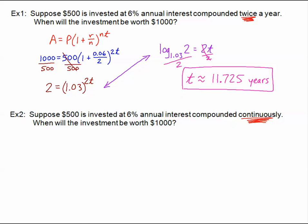Example two is almost identical except, remember, the buzzword continuously. That's the PERT formula. A equals PE to the RT. The numbers are basically going to go in the same spots, the 500 and the 1,000, so I have $1,000 here. The 500 is my coefficient. E is E. My rate is still 6%, so 0.06 and T is what we don't know.